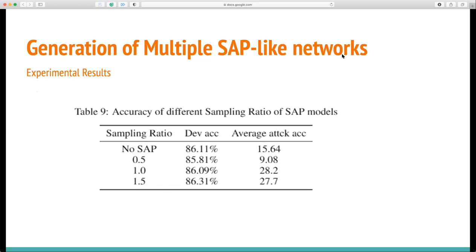We use a scale-up factor in the algorithm and applied different sampling ratios. From the results, we can see that with a 100% sampling ratio, we can make the networks perform the best.